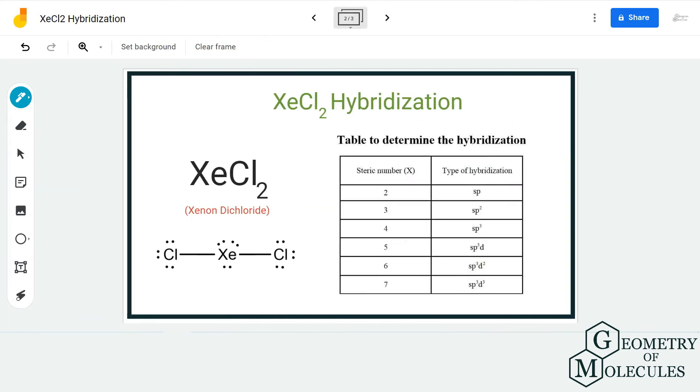table, we can see that steric number 5 corresponds to sp3d hybridization. Hence, the hybridization for the xenon atom in this molecule would be sp3d. This is because the xenon atom needs to form five hybrid orbitals to accommodate all